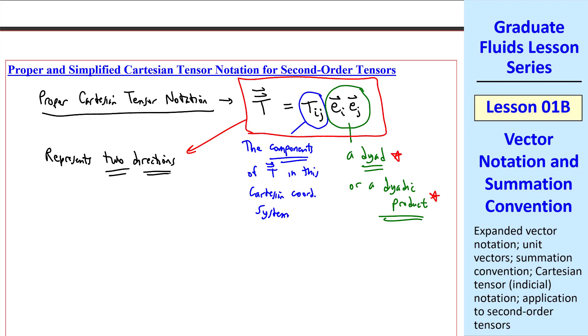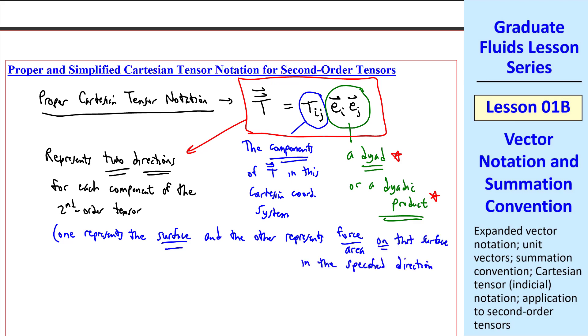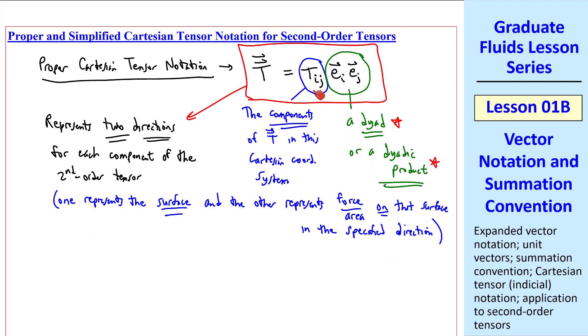What does this mean? This dyadic product represents two directions for each component of the second-order tensor. One of these represents the surface that we choose, and the other represents, in this case, a stress tensor, the force per unit area on that surface in the specified direction.